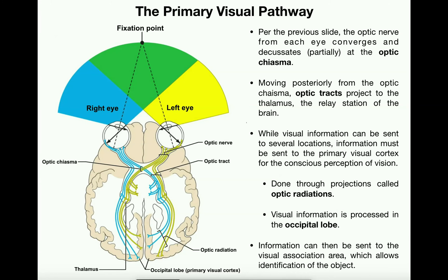Decussate means to cross over and form an X, and that occurs at a structure called the optic chiasma. Over here is the left eye, here's the right eye — we're still looking from the patient's perspective, so this is left over here. The optic nerve of the left eye is shown in yellow, the right eye in blue. Notice at the optic chiasma, not all of the fibers cross over — some do and some don't. So on both sides of the brain, we have some fibers from the left and some from the right. Anterior to the optic chiasma they are just optic nerves, but posterior to it, everything is called an optic tract. The optic tracts project posteriorly toward the thalamus.